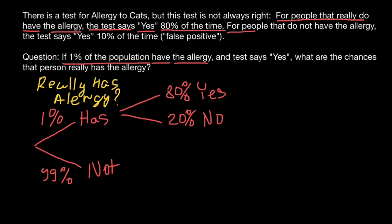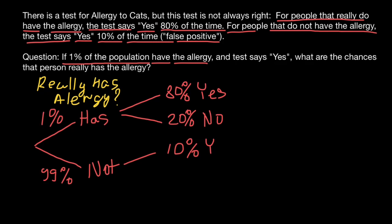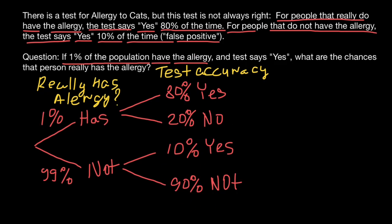Now let's check the other group — people that do not have the allergy. The test says yes 10% of the time, so those are false positive. So 10% of the 99% who don't have allergy would test positive because the test is not accurate. That also means 90% of the time, these non-allergic people would correctly test negative. These percentages represent the test accuracy.